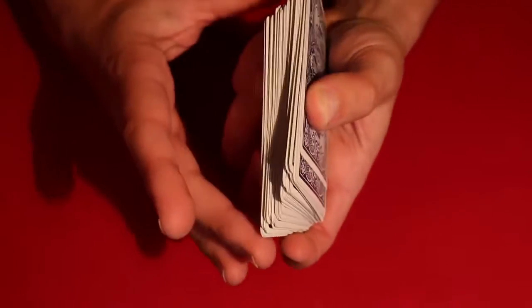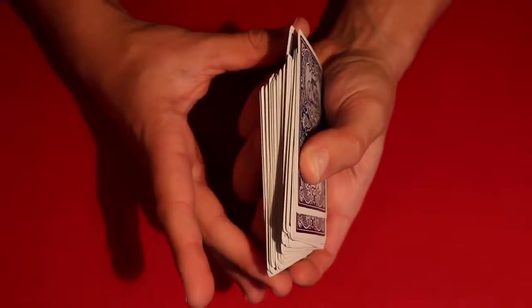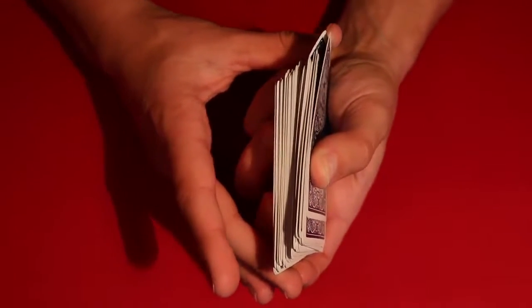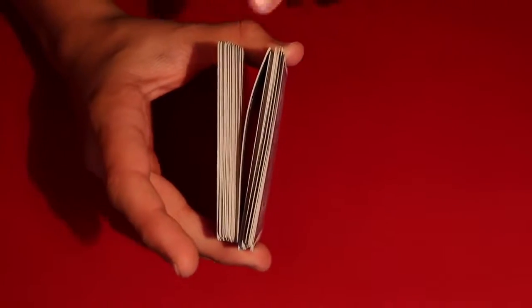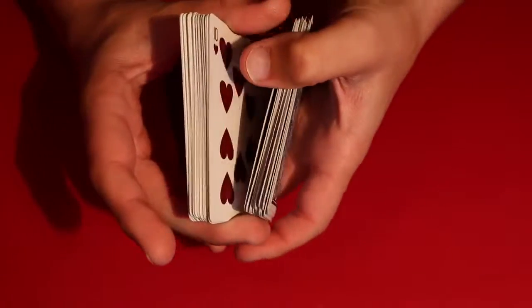So right above this out-jog, all you have to do is take your thumb and your middle finger, push up into the card, and then close the grip. And that's going to cause the deck to form a break right here. And all you do is pick up from the break.